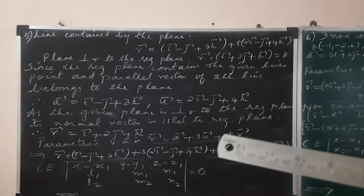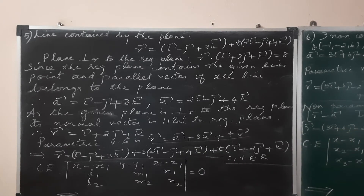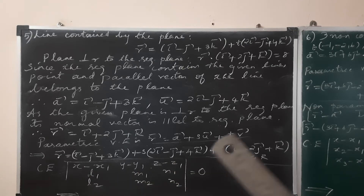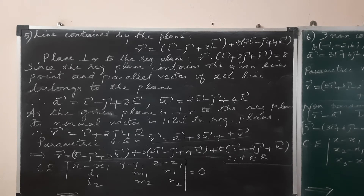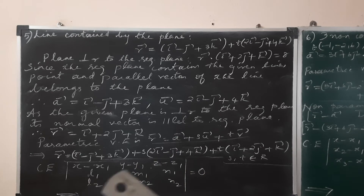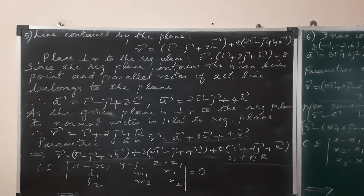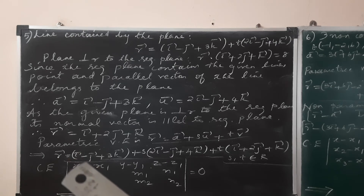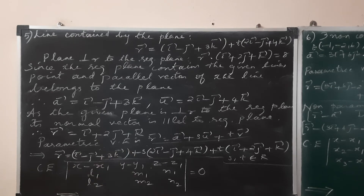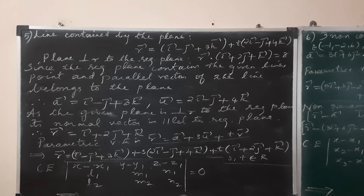With one point and two parallel vectors, we get the vector equation in parametric form. The Cartesian equation format uses the determinant: x minus x1, y minus y1, z minus z1 over l1, m1, n1 over l2, m2, n2, set equal to zero. Now we fill in and expand.